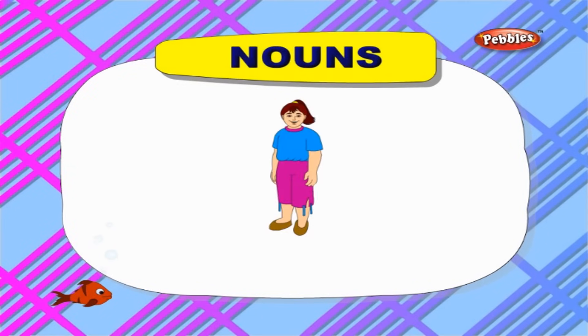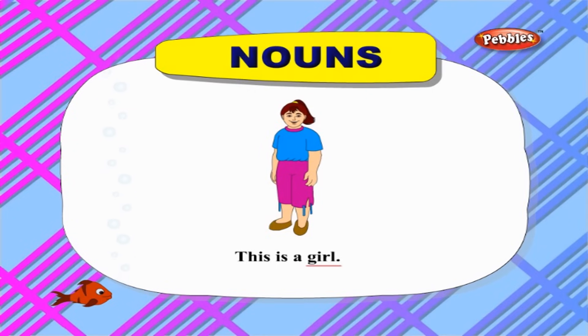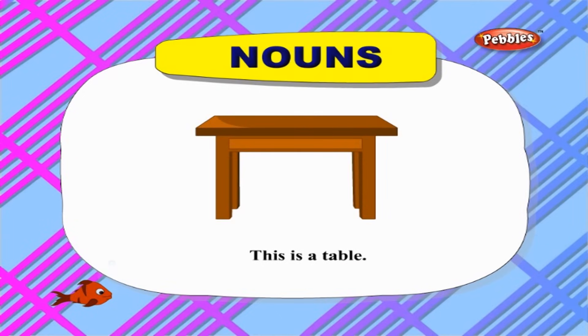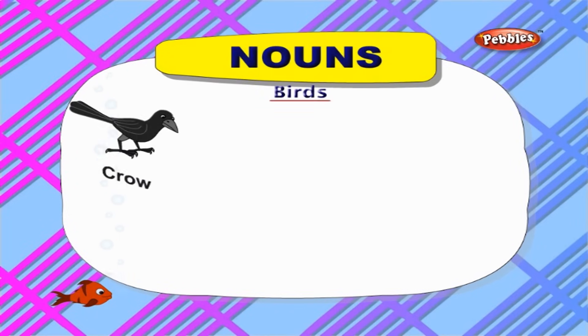As you all know, a noun is the name of a person, place, animal, or a thing. This is a girl — 'girl' is the name of a person. This is a school — 'school' is the name of a place. This is a dog — 'dog' is the name of an animal. This is a table — 'table' is the name of a thing.